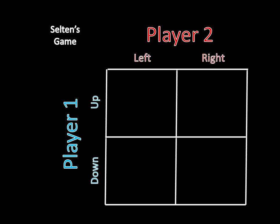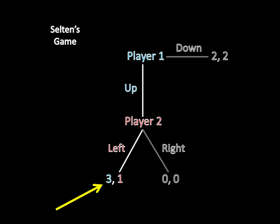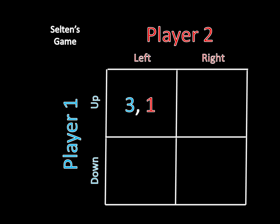And filling those in is as simple as going down the game tree and seeing what the payoffs are for those particular moves. Let's start with up and left. And if you follow the game tree, you eventually get to 3-1. So player one moves up, player two moves left, and you arrive at this 3-1 outcome. And we toss it into there just like that. Very simple.